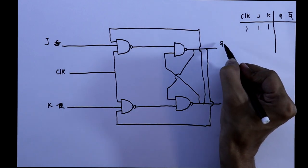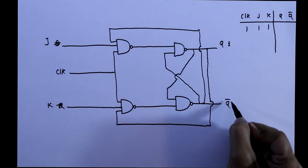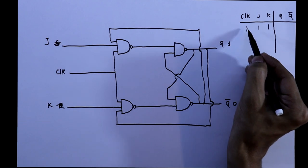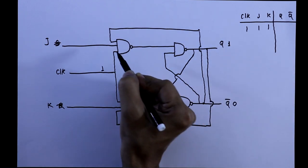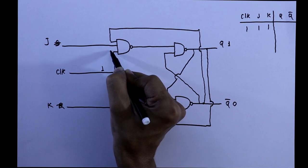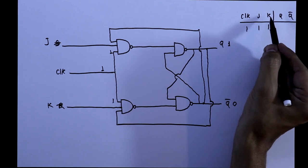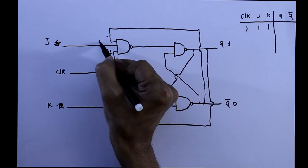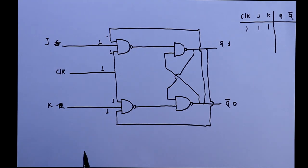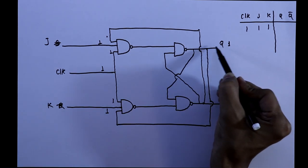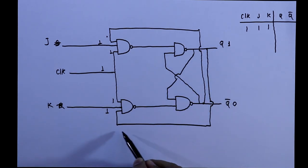Assume Q as 1 and Q bar as 0. As CLOCK is 1, so here it will be 1. It means one input of the NAND gate is 1 and here also we are getting 1. J is 1, K is 1, here it is 1 and here also. As Q is 1, so this 1 is connected to here.